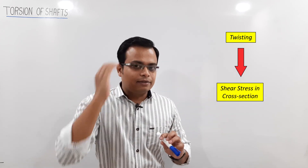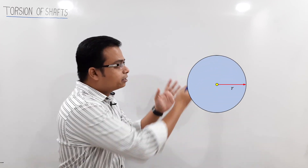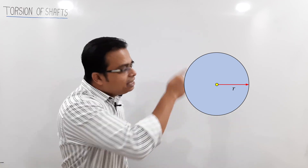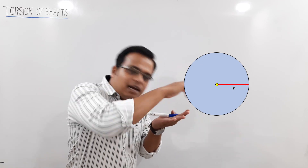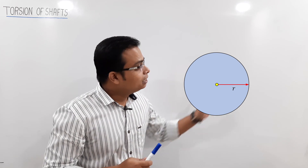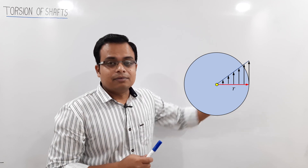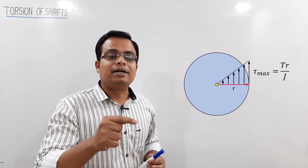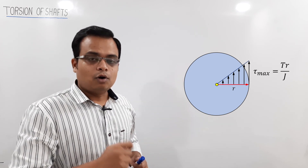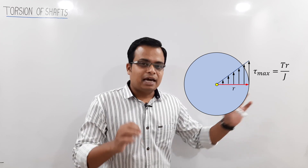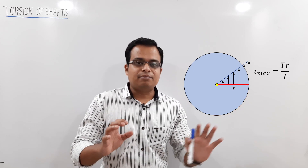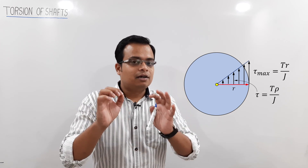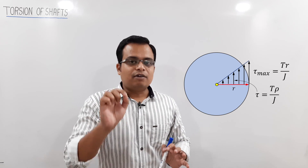Think of a circular cross-section with a center. If you walk along a radial line from the center outward, the magnitude of shear stress keeps increasing and becomes maximum at the outermost point — when you reach the radius of the shaft. All these shear stresses can be calculated using the formula τ = Tρ/J, and maximum shear stress τ = T·R/J.